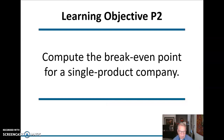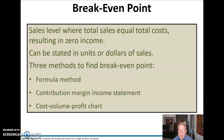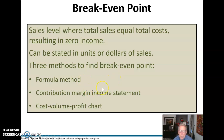So how are we going to use this? Let's look at computing the break-even point for a single product company — the sales level where total sales equal total costs, resulting in zero income. We can express that in terms of either units or dollars of sales. There are three methods to find this break-even point: the formula method, the contribution margin income statement, and the cost-volume-profit chart.